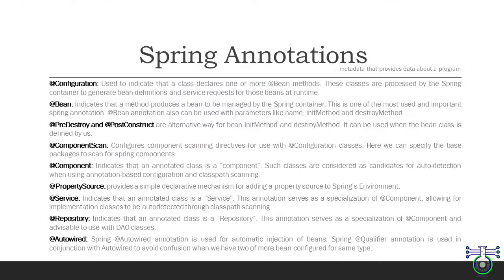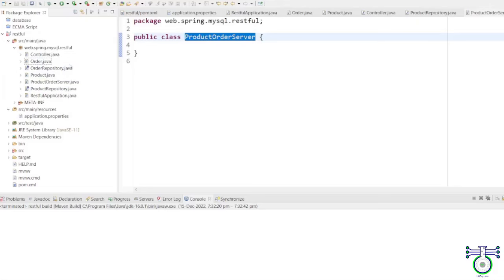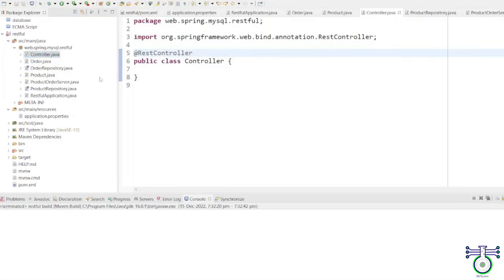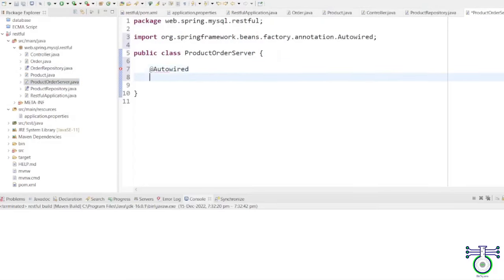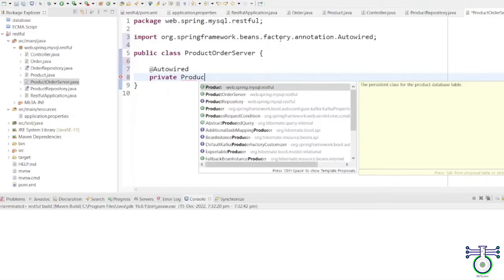The @Service annotation is used to indicate that an annotated class is a service. This annotation serves as a specialization of @Component, allowing implementing classes to be auto-detected through classpath scanning. For example, I am creating a ProductOrderService class. Inside this class, we are injecting a ProductRepository bean into the ProductService class using the @Autowired annotation.